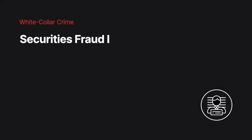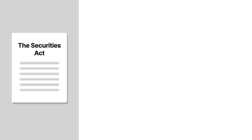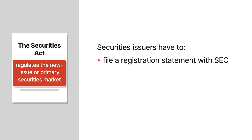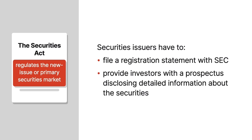Two statutes authorize comprehensive federal regulation of the securities industry. The Securities Act of 1933 regulates the new issue or primary securities market. The statute requires securities issuers to file a registration statement with the Securities and Exchange Commission, or SEC, to provide investors with a prospectus disclosing detailed information about the securities.